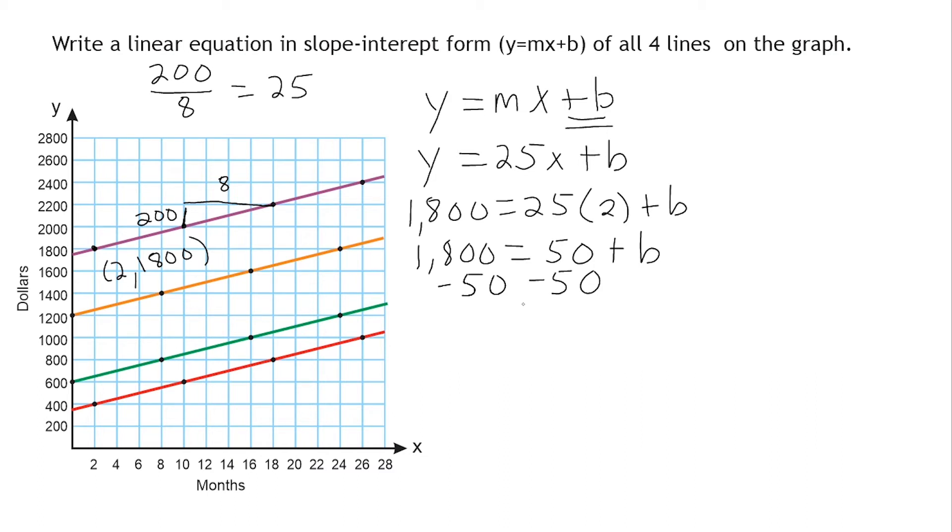So on the left-hand side, we have 1,750, and on the right-hand side, we have b. And that is what b is equal to. So what we can do is we can go ahead and we can swap b out with 1,750. So this is the equation in slope-intercept form that represents that purple line.